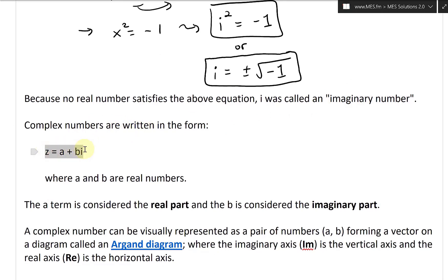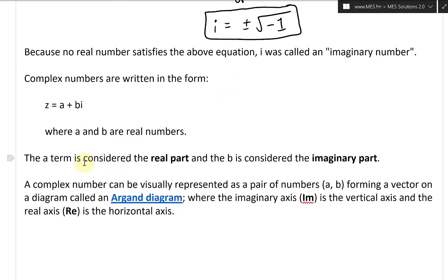z = a + bi, where a and b are real numbers and i is an imaginary unit. The a term is considered the real part, and even though a and b are both real numbers, it's just indicating that a is for the real part, b is the imaginary part.